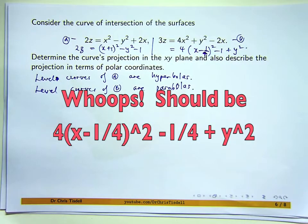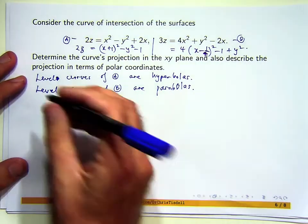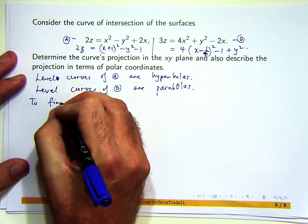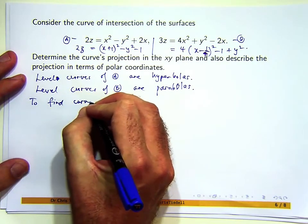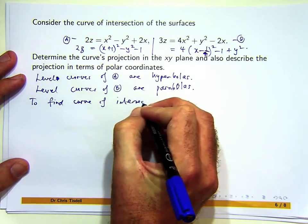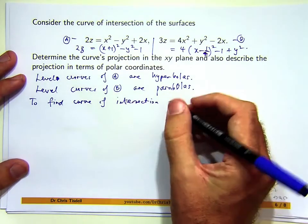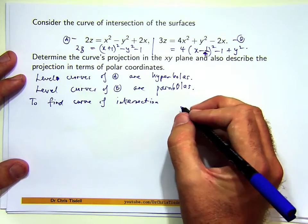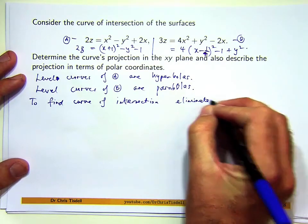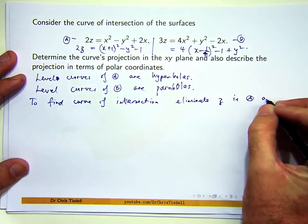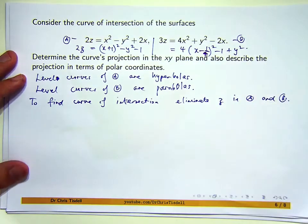That's a good exercise for you to do if you can actually work it out. Of course, the easiest way is to use Maple or some other graphing package. You don't need to know what the surfaces look like to actually compute the intersection. To find the curve of intersection, eliminate z in A and B.